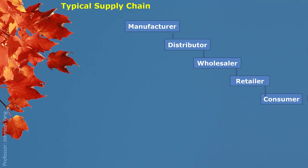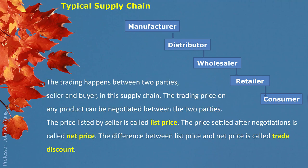This is a typical supply chain. The trading happens between two parties in any supply chain. The two parties are seller and buyer. The trading price on any product can be negotiated between the two parties. The price listed by the seller is called list price. The price settled after negotiations is called net price. The difference between list price and net price is called trade discount.